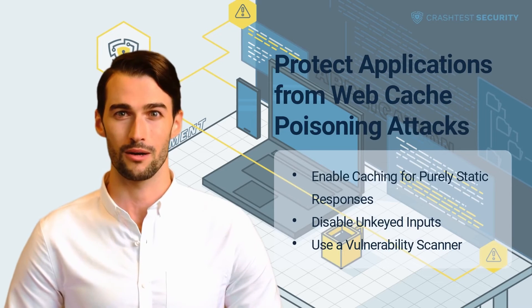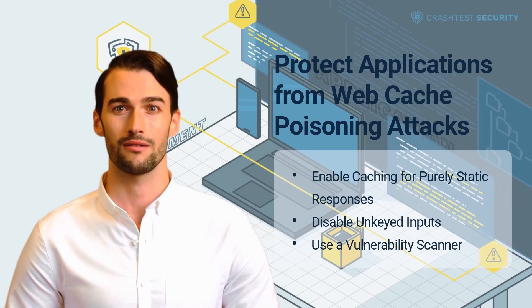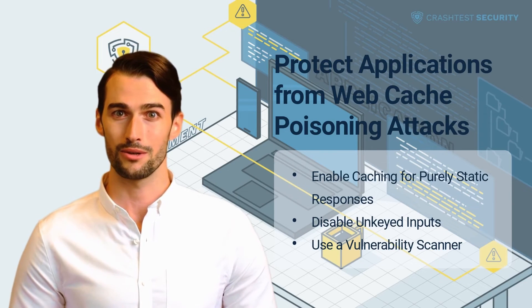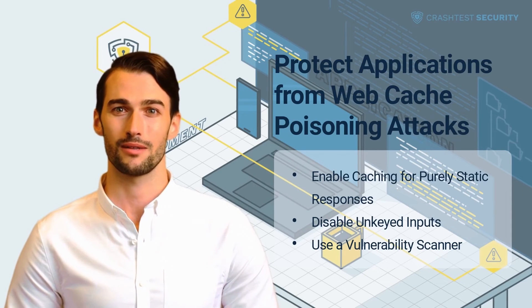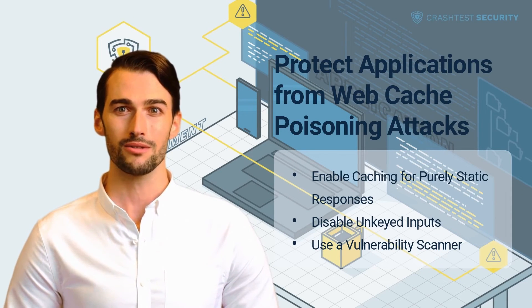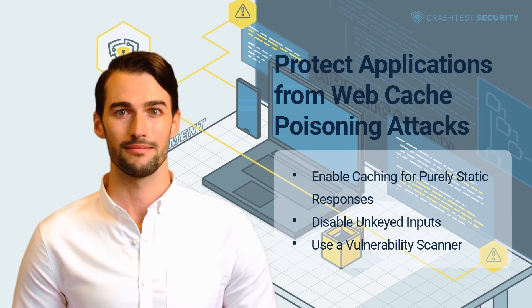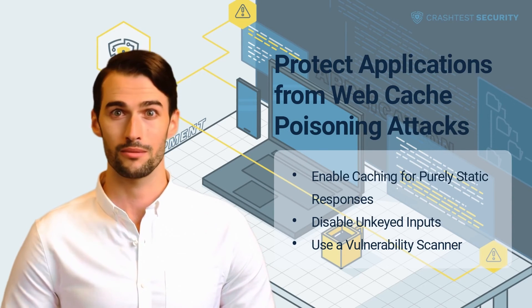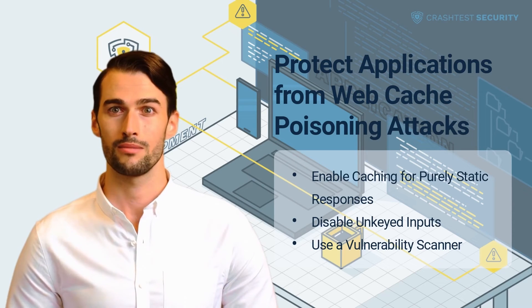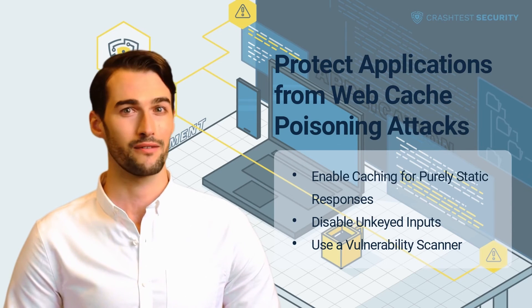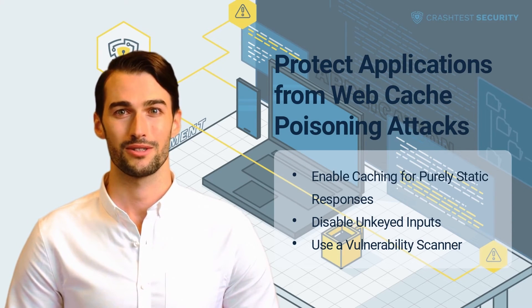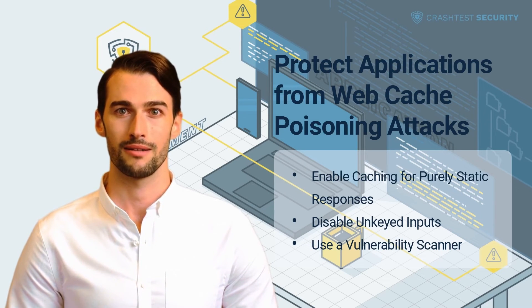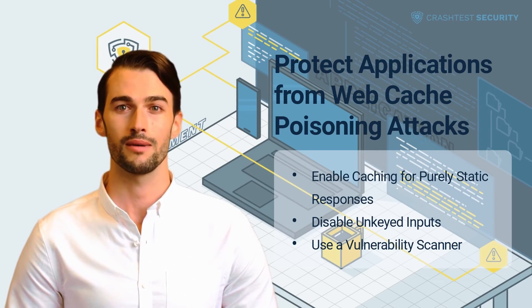Some strategies to prevent web cache poisoning vulnerabilities on applications include: Enable caching for purely static responses. Although it is tempting to disable caching entirely, this is not a recommended fix, as caching improves the performance of an application. While caching should be enabled, it is advised to keep it restricted only for purely static responses to prevent attackers from manipulating the server into obtaining a harmful response.